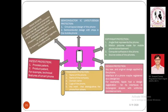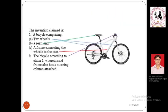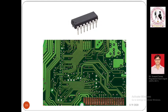Semiconductor IC layouts: whenever you open any electronic device or machine, you see internal circuitry with small black-colored chips. These chips are IC layouts. Though shown in a larger size in this picture, these chips are available in millimeter sizes in the market, and all these chips are used to operate your phone in a dedicated function.